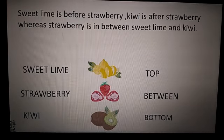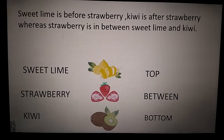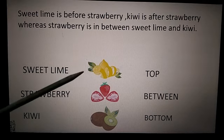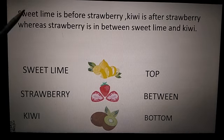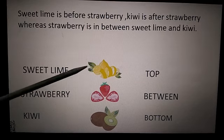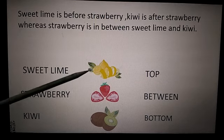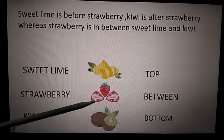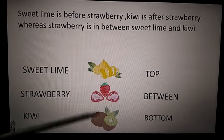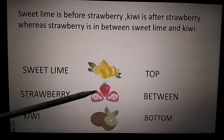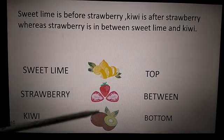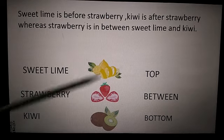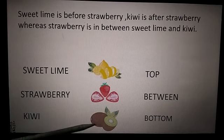Likewise, we have another example of some fruits. This is a sweet lime. Sweet lime is before the strawberry. Kiwi is after the strawberry, whereas strawberry is in between the sweet lime and kiwi.